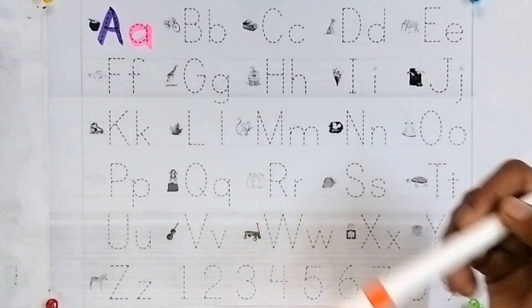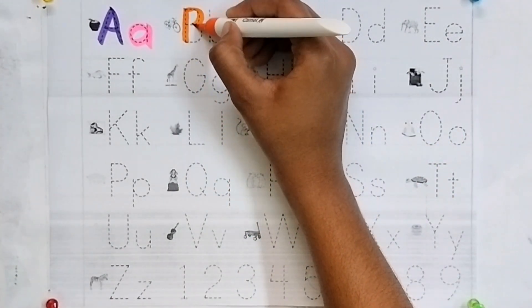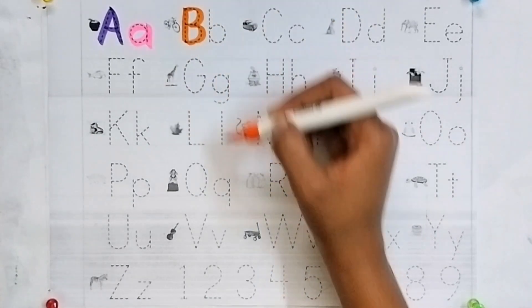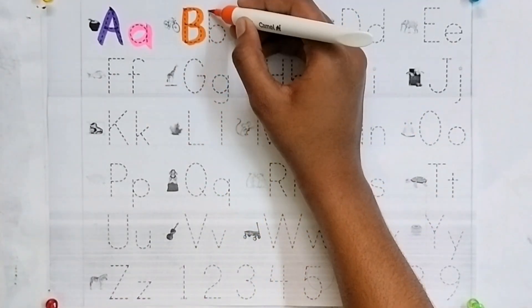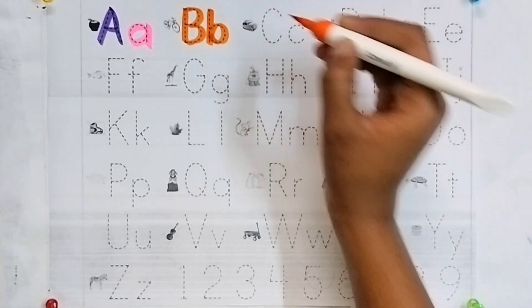Orange color. B for ball. Small b. B for basket.